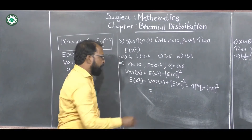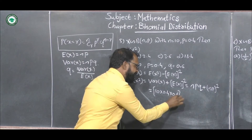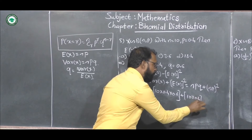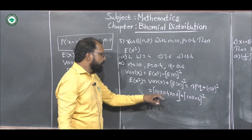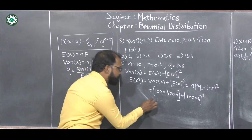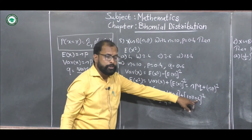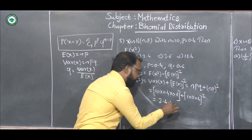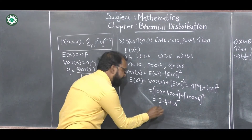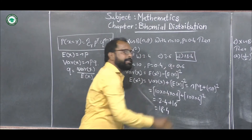We know Variance of X = NPQ and E(X) = NP. So E(X²) = NPQ + (NP)². Substituting: N=10, P=0.4, Q=0.6. NPQ = 10 × 0.4 × 0.6 = 2.4, and (NP)² = (10 × 0.4)² = 4² = 16. Therefore E(X²) = 2.4 + 16 = 18.4.